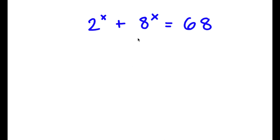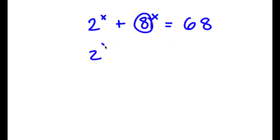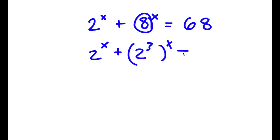In this problem, I have 2 to the power of x plus 8 to the power of x equals 68. First, we write 8 as 2 to the power of 3, so now I have 2 to the power of x plus 2 to the power of 3x is equal to 68.